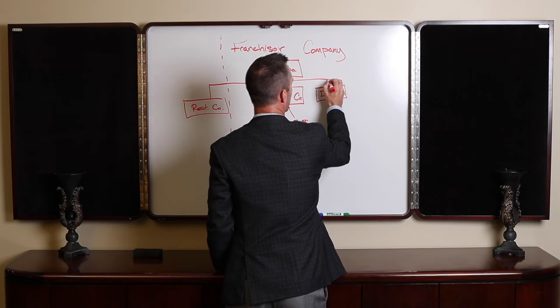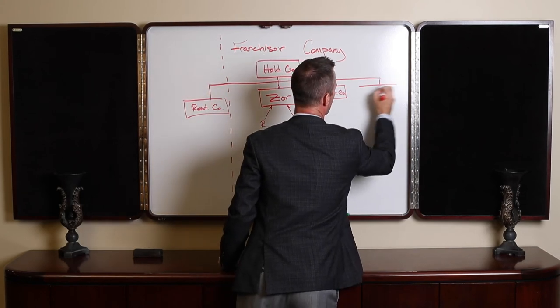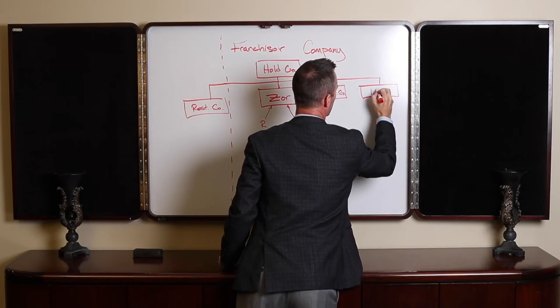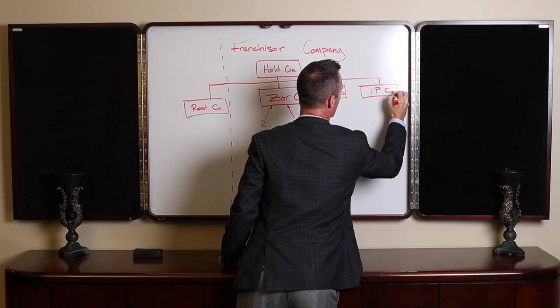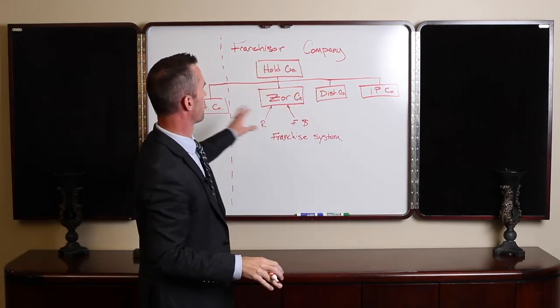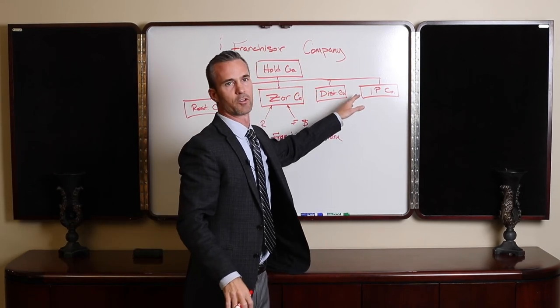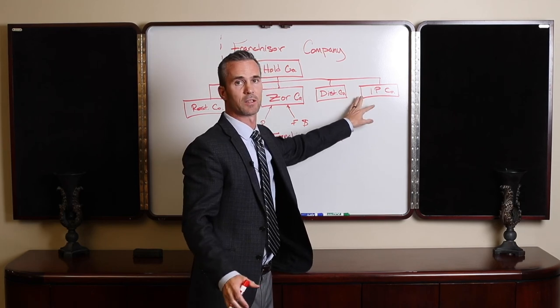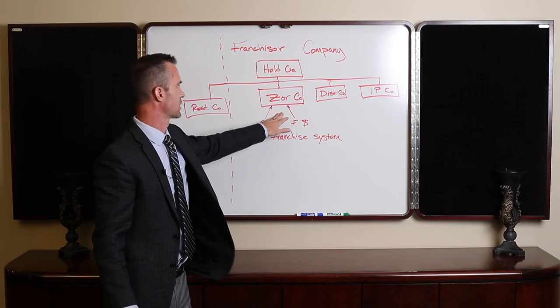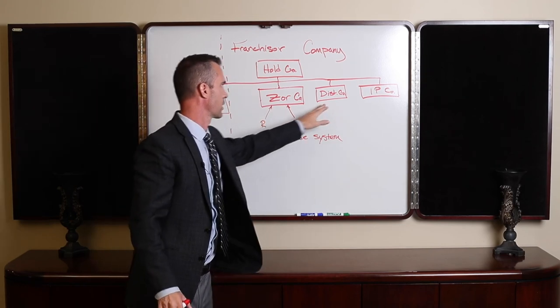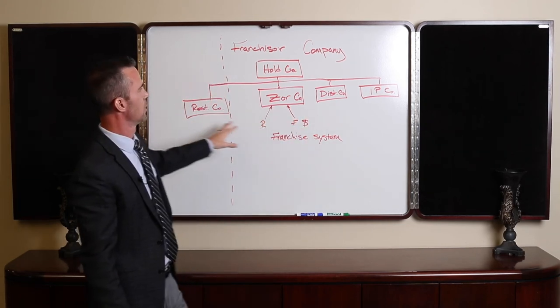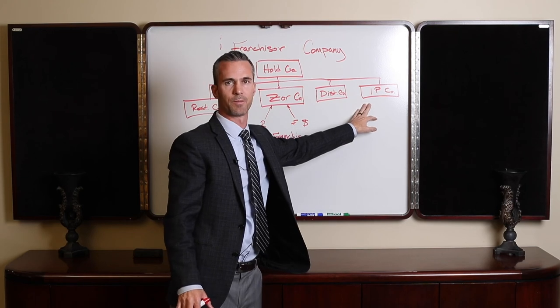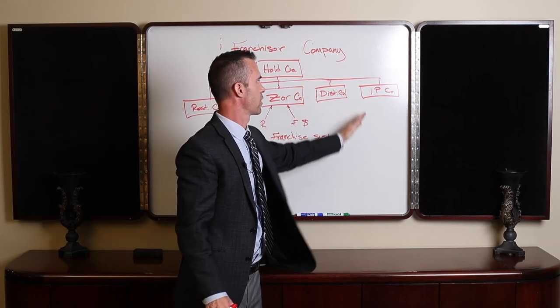Sometimes what they'll have here is an IP company - IP Co. Now your intellectual property, your recipes, your trademark, all of your intellectual property is held here. So now if your franchise company gets sued, or your distribution company gets sued, or even your restaurant company gets sued, the IP is totally separate. It's separated over here and you're not going to lose it.